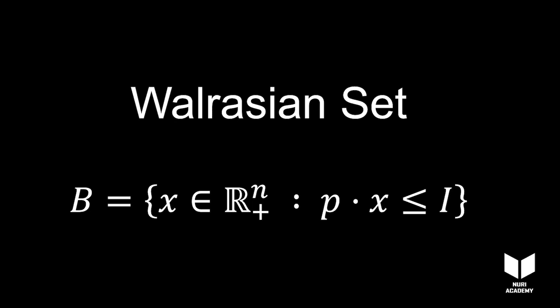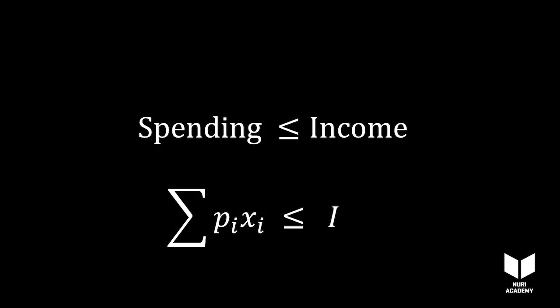We saw that the Walrasian set or the budget set is a mathematical model of the fact that you can't spend more money than you have.